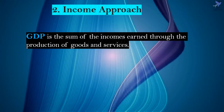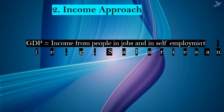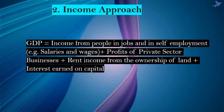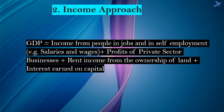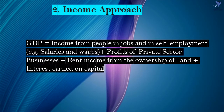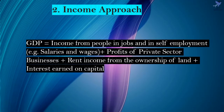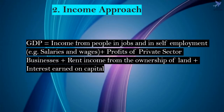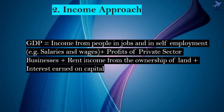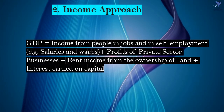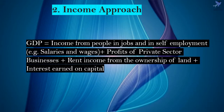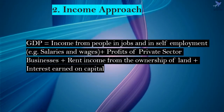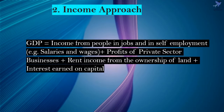GDP equals income from people in jobs and self-employment — for example, salaries and wages — plus profits of private sector businesses, plus rent income from the ownership of land, plus interest earned on capital. If you add these up, you get GDP through the income approach.